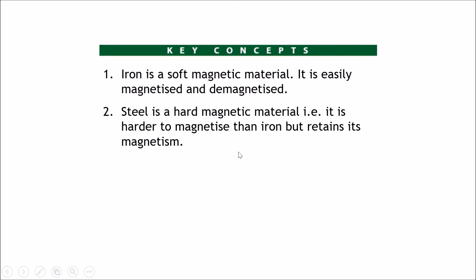To summarize the key concepts: iron is a soft magnetic material — it is easily magnetized and demagnetized. Steel is a harder magnetic material — it is harder to magnetize, making a weaker magnet; however, it retains its magnetism.